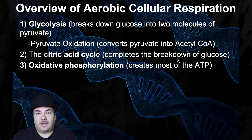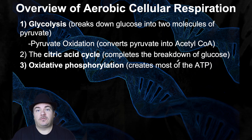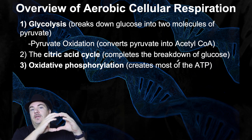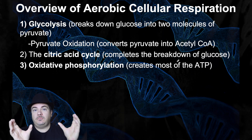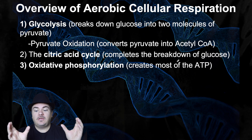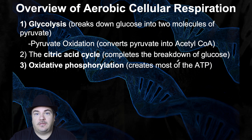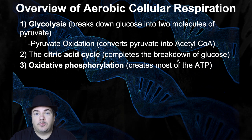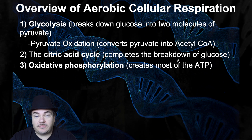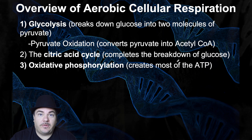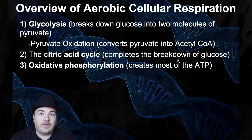The first main stage is called glycolysis. You take that glucose molecule — built out of six carbons — and break it in half into two molecules, each with three carbons. Those three-carbon molecules are called pyruvate. Then you have the minor stage called pyruvate oxidation, which takes pyruvate made during glycolysis and turns it into acetyl-CoA. You need to do that because glycolysis ends with pyruvate, but the second main stage — the citric acid cycle — starts with acetyl-CoA.